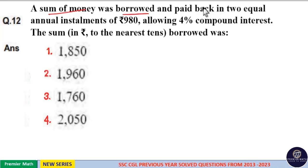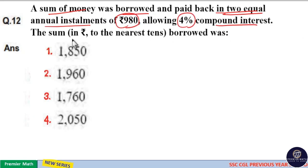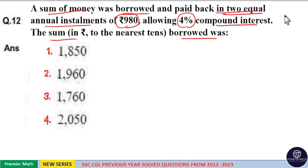A sum of money was borrowed and paid back in two equal annual installments of Rs. 980 allowing 4% compound interest. The sum borrowed was.